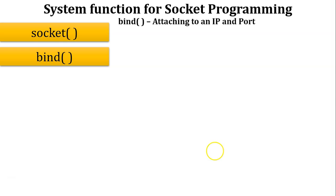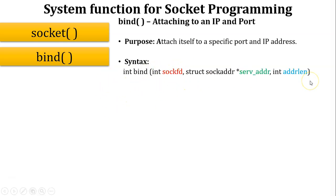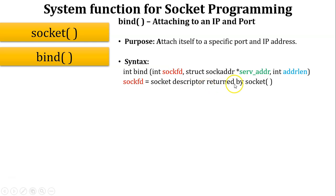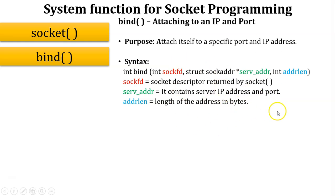The next function is bind, meaning attaching to an IP and port number. Bind is used by the server so it can bind the IP address as well as a specific port with a specific service. The syntax is: int bind(sockfd, server_address, address_length). The first argument sockfd is the socket descriptor returned by the socket function. The second argument server_address contains the server IP address and port number. The third argument is address_length, which is the length of the address in bytes, including both IP address and port number.